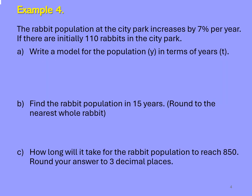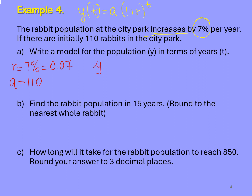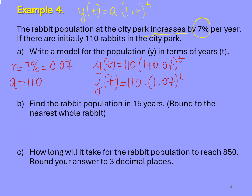To find the solution for Example 4, we will use the exponential growth formula: Y of t equals initial value A times (1 plus rate r) to the power of t. We have an increasing process with a rate of 7%. First step: convert 7% to a decimal — it would be 0.07. Initial value A is 110 rabbits. Now we write our model: Y of t equals 110 times 1.07 to the power of t.